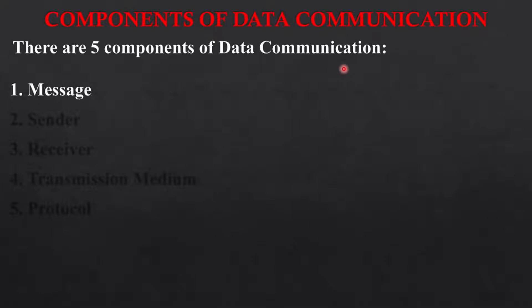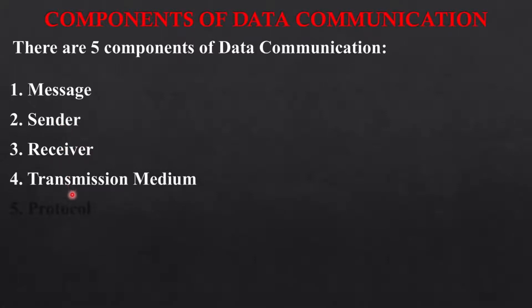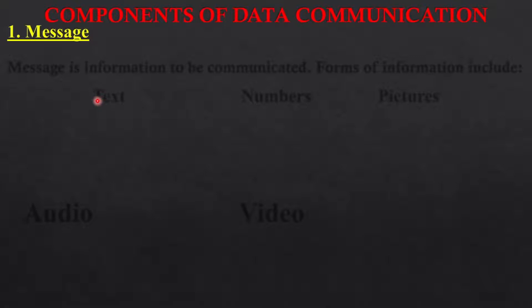The first component is message, second component is sender, third component is receiver, fourth component is transmission medium, and fifth component is protocol. Without using these five components you cannot communicate. We'll see these components one by one. The first component is message.